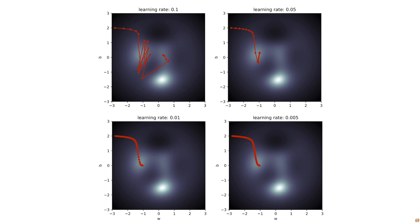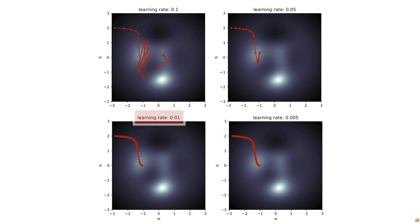We can also look at the effect of the learning rate. If we set it too high, gradient descent jumps out of the first minimum it finds. A little lower at 0.05, and it stays in the neighborhood of the first minimum but bounces from side to side in the bowl that the local minimum forms, only very slowly moving towards the actual minimum. At 0.01, we find a sweet spot where it finds the local minimum pretty quickly. And at 0.005, we see the same behavior but it takes many, many more steps because the step sizes are so small.